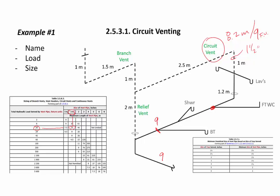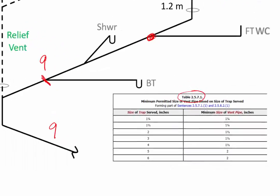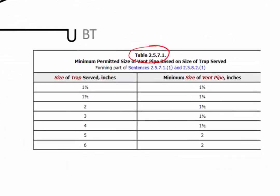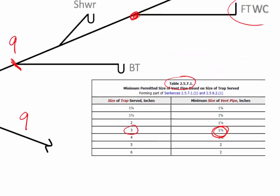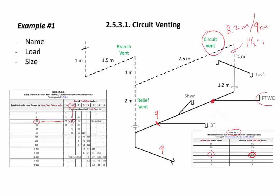As a dry vent we also need to double-check table 2571 for minimum size based on the largest trap served. The largest trap on the circuit is the three inch water closet — the flush tank water closet. For three inch traps, the minimum size of venting is inch and a half, so we're fine with inch and a half for the circuit vent.